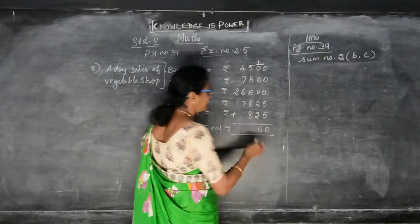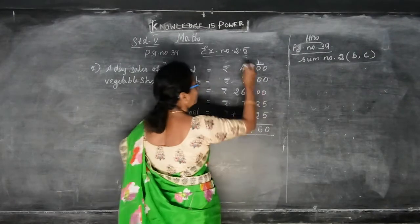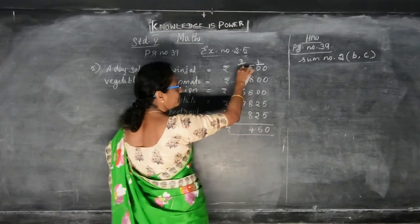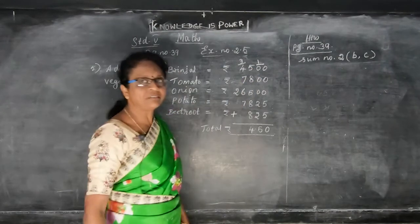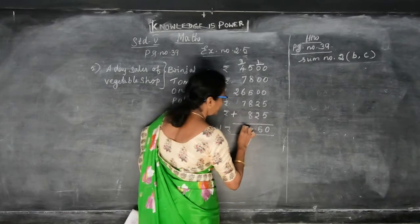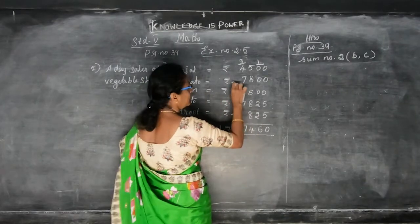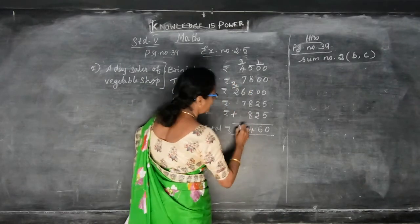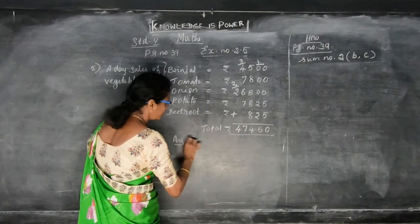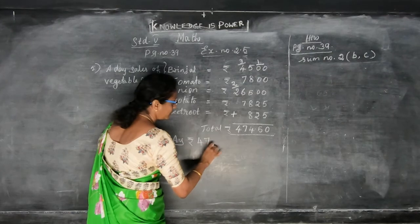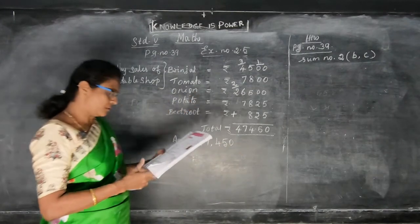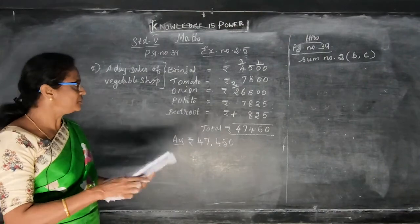26 in the mind and again 8 in the fingers — that gives you 34. So 3 plus 4 is 7. Same 7 plus 7 is 14. 14 plus 6 is 20. 20 plus 7 is 27. And 2 plus 2 carry over — that gives you 4. So the answer is: total amount of vegetables is Rs. 47,450. This is the total amount of sales.